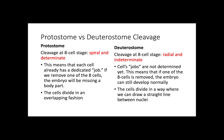So, what does this mean? Determinate means that, in the case of protostomes, each cell already has a dedicated job. So, if we remove one of the eight cells, the embryo will be either missing a body part or missing some major life function, because each cell already has a determined role. For protostomes, we're going to see spiral cleavage, meaning that the cells divide in an overlapping fashion and we cannot draw a line between the nuclei.